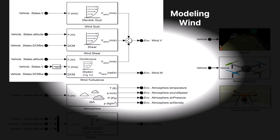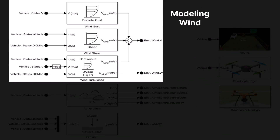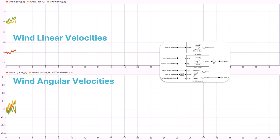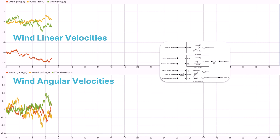We'll begin by developing a wind model that captures gusts, wind shear, and turbulence characteristics. The wind gust model block simulates gusts based on configurable parameters such as amplitude, direction, and start time.